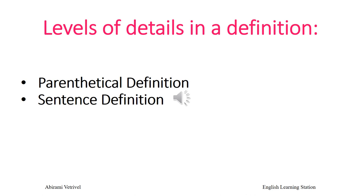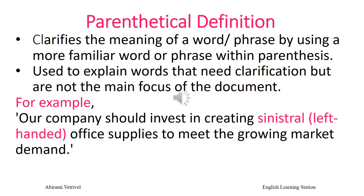There are two types of definitions based on the level of detail: parenthetical definitions and sentence definitions. Many times, the meaning of a word can be clarified by using a more familiar synonym or a clarifying phrase. Parenthetical definitions clarify the meaning of a word or phrase by using a more familiar word or phrase within parentheses. Parenthetical definition is used to explain words that need clarification but are not the main focus of the document.